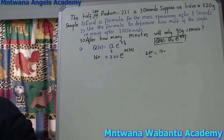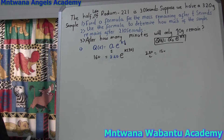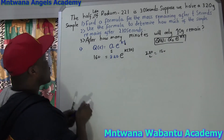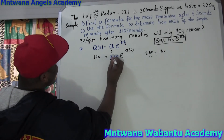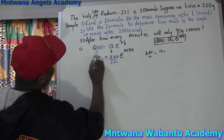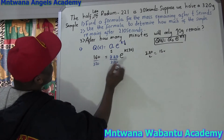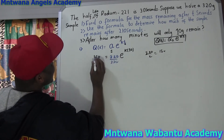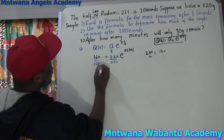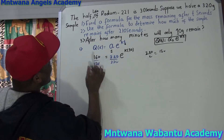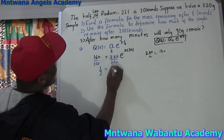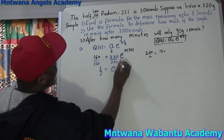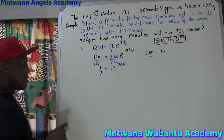Now we're going to make K the subject. What we're going to do is divide by 320 throughout. Divide by 320 on both sides. This and this cancel. So it's going to be 1/2 — that is, 160 over 320 equals 1/2 — equal to E to the 30K. We can say 30K or K times 30, same thing.